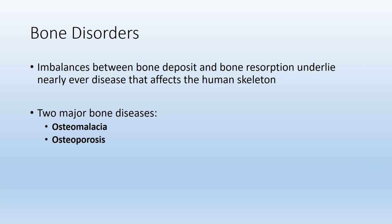Lastly, we'll address a couple of clinical correlations — bone disorders. Anytime there's a bone disorder, whether osteomalacia, osteoporosis, rickets, or osteoarthritis, it usually results from an imbalance between the deposit of bone tissue and the resorption of bone tissue. The two we will focus on are osteomalacia and osteoporosis.